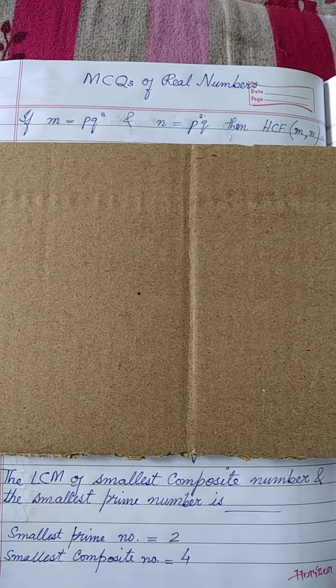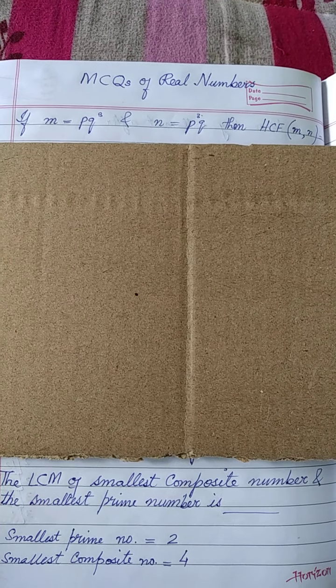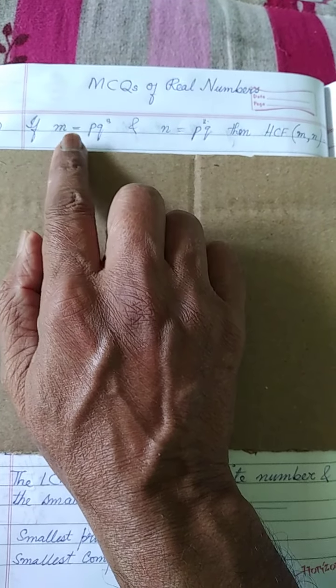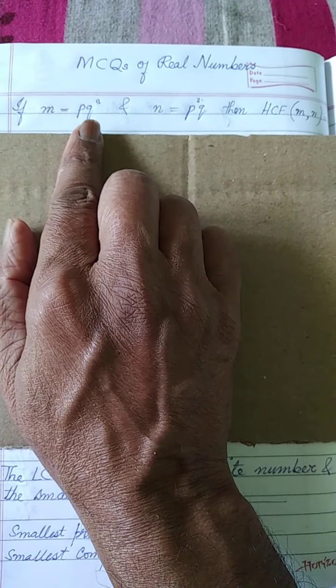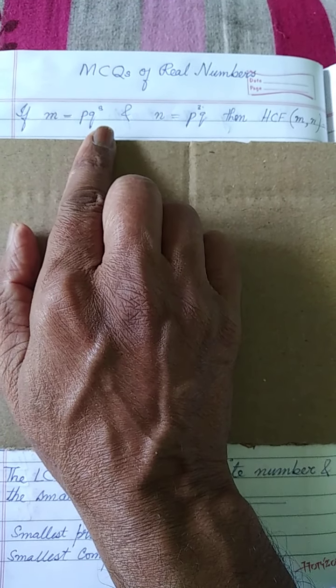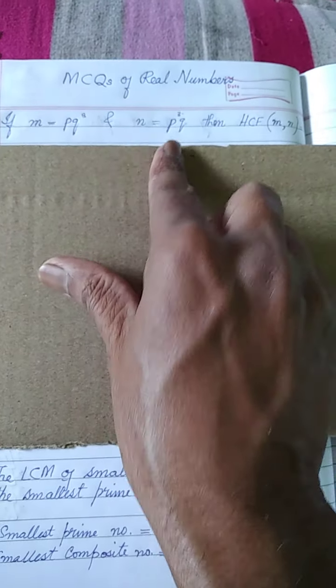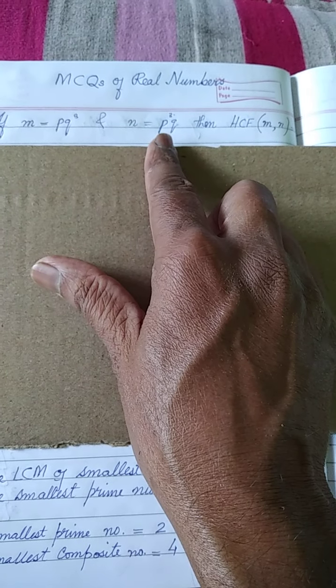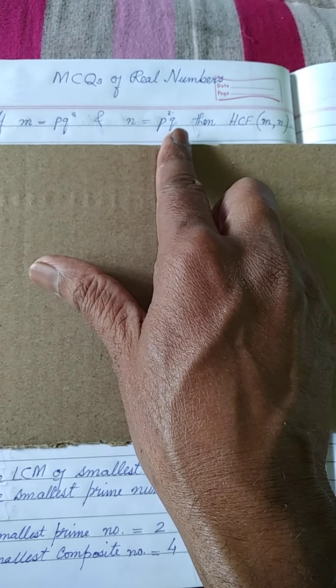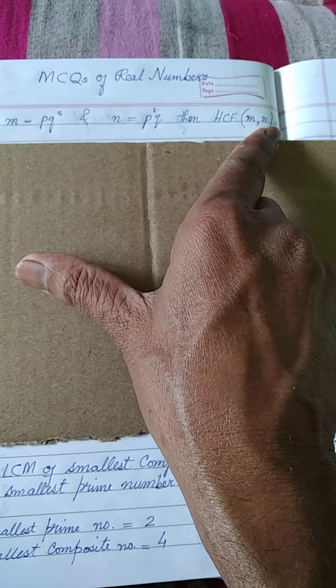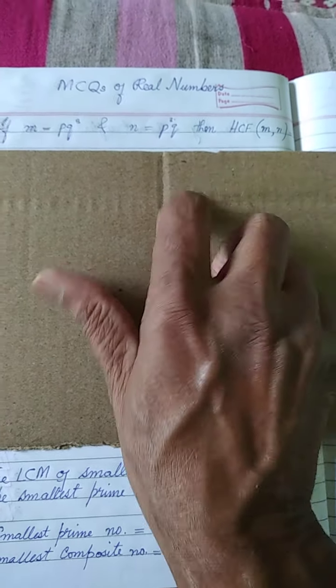Hello students, today we will do some MCQs of real numbers. Question number 1 is: if M is equal to PQ cube and N is equal to P cube Q, then the HCF of M and N will be?